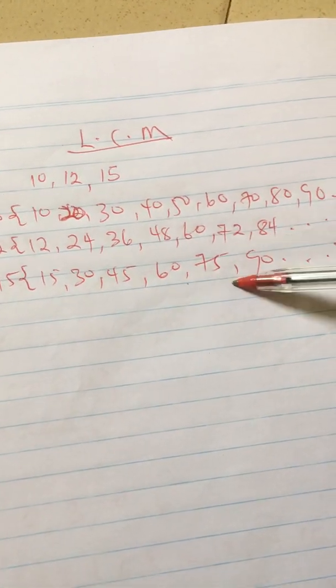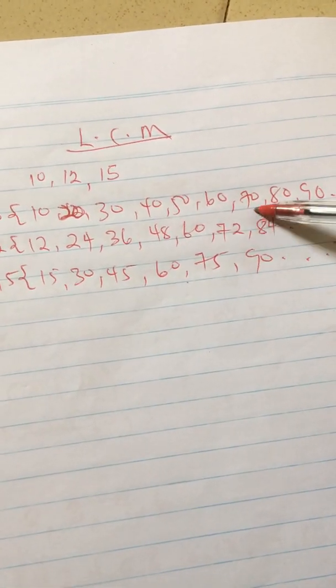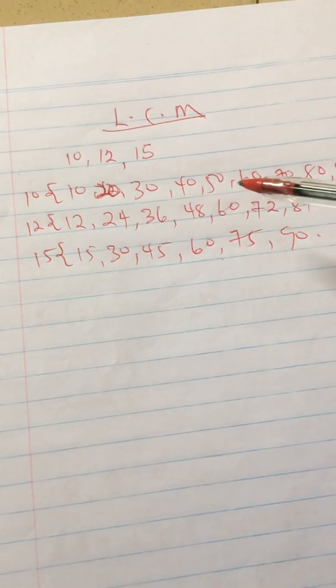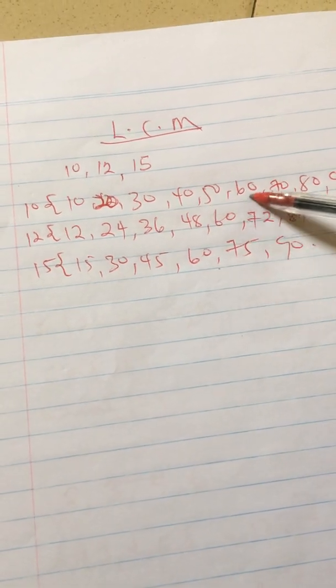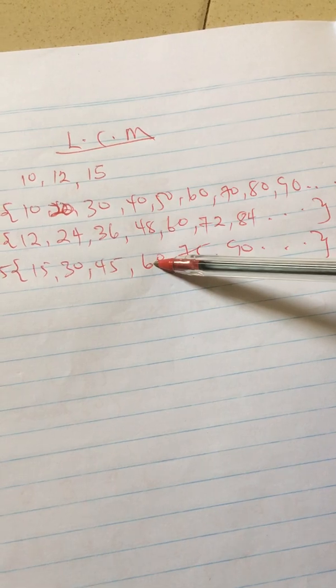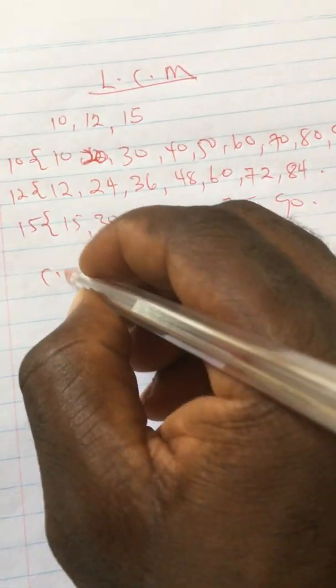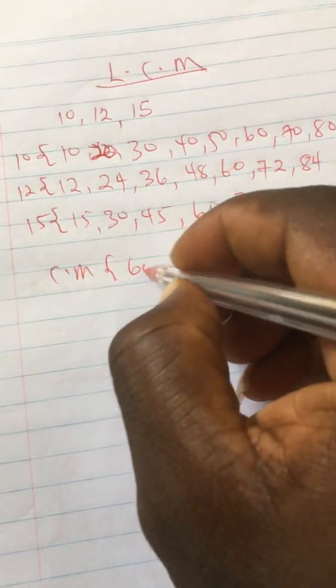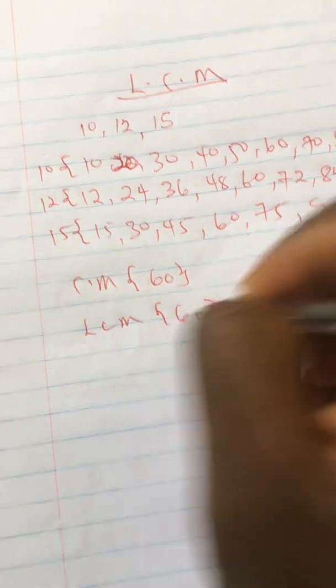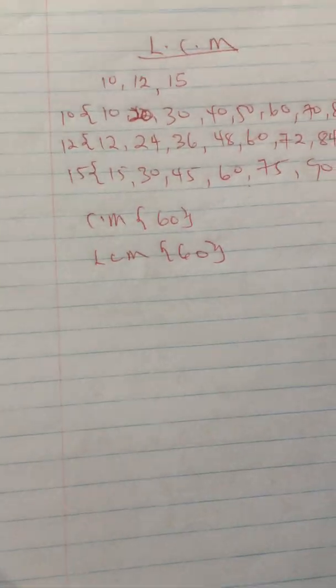When you are done, you look at these three lists and fish out the number that appears in all three. When you look carefully, you realize that 60 appears in all three sections, and so our LCM is 60.